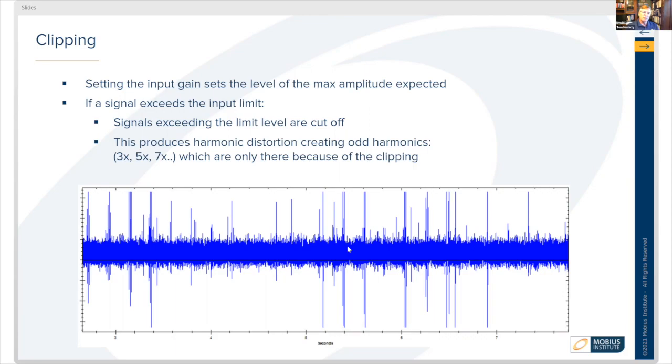Some of the data gets cut off, producing harmonic distortion that creates odd harmonics at three times, five times, seven times the frequency, which are only there because of clipping.